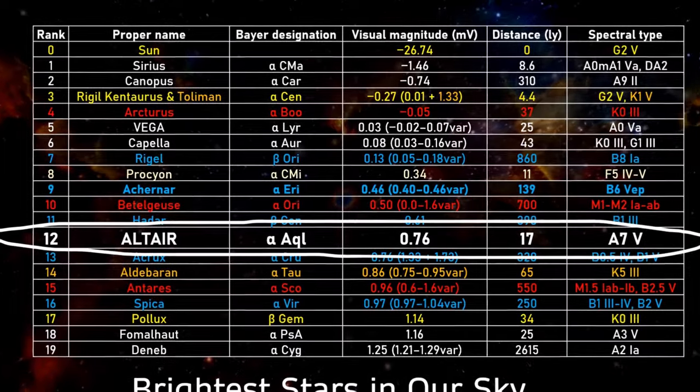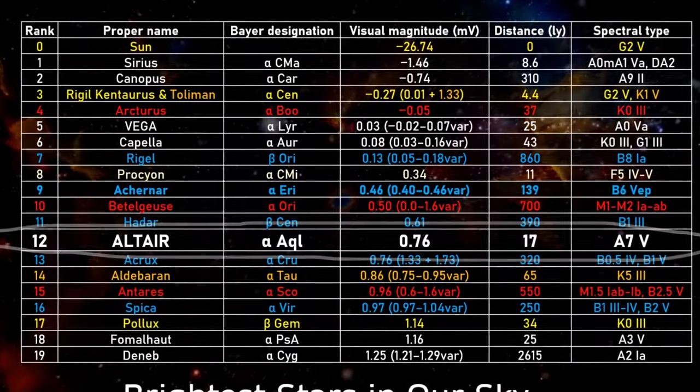The eagle star of Altair is the brightest star in the constellation of Aquila and the 12th brightest star in our night sky. Altair usually outshines the variable Aldebaran in Taurus, Antares in Scorpius, and Spica in Virgo.